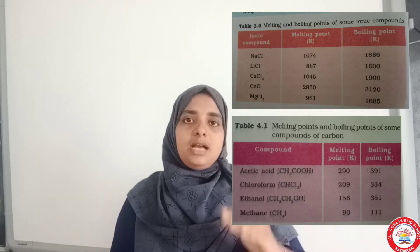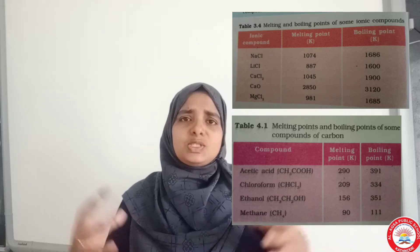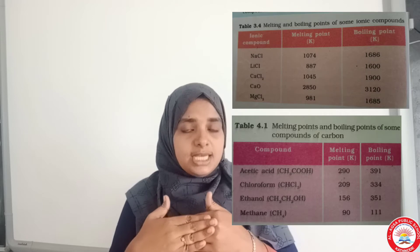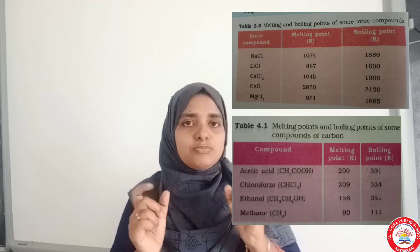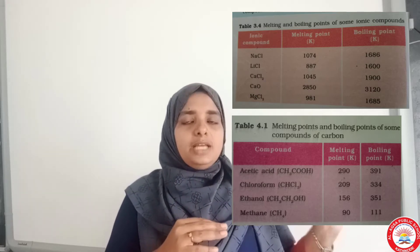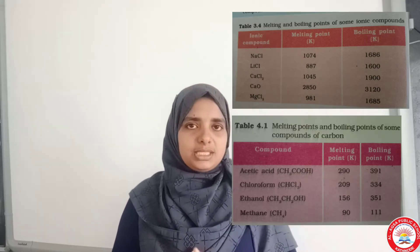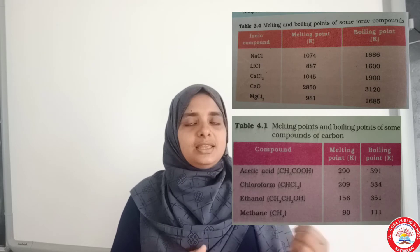We have already studied that ionic compounds have high melting and boiling points because there is a strong force of attraction between the molecules. So we have to give more energy to break this strong force of attraction. Here the boiling and melting points of carbon compounds are less than ionic compounds, which means there is not a strong force of attraction between the molecules of carbon compounds — the force of attraction is less.